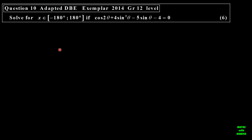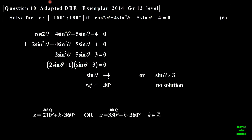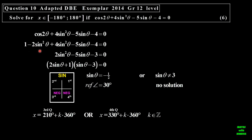Consider this one. We'll have to use an identity, so we'll use the identity for cosine of 2 theta. Because I've got sines, I convert using the sine version: 1 minus 2 sine squared. I simplify that and end up with a trinomial. I can factorize the trinomial. Each factor can be equal to 0. For this one, I get the reference angle of 30. Sine x is equal to 3, but that's not possible, so there's no solution there. Sine is negative in the third and the fourth: 180 plus 30 is 210, and 360 minus 30 is 330. I add my generating term so I can get my general solution there.